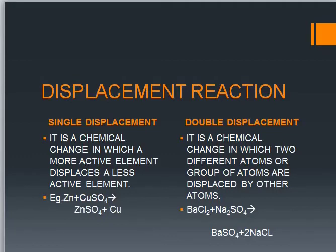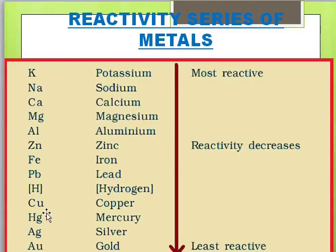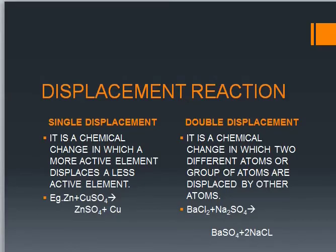Double displacement reaction is a chemical change in which two different atoms or groups of atoms are displaced by other atoms. For example: barium chloride plus sodium sulfate. Sodium is higher in the activity series than barium, so sodium is stronger. Sodium displaces barium and takes its place, forming sodium chloride. Barium then combines with sulfate to form barium sulfate. This is how a double displacement reaction works.